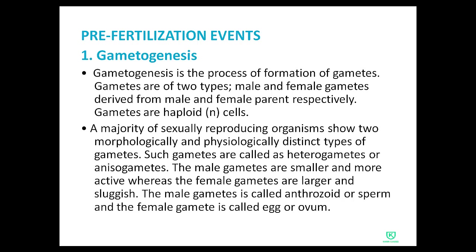The male gametes are smaller and more active, whereas the female gametes are larger and sluggish. The male gametes are called antherozoid or sperm, and the female gametes are called egg or ovum.